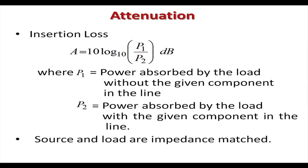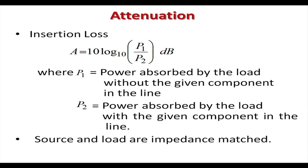Attenuation A is given by the ratio of P1 and P2, where P1 is the power absorbed by the load without the given component, and P2 is the power absorbed when that device is inserted in the network. We assume that the source, load, and all other components are impedance matched, so no power is lost due to mismatch. That is the definition of attenuation.